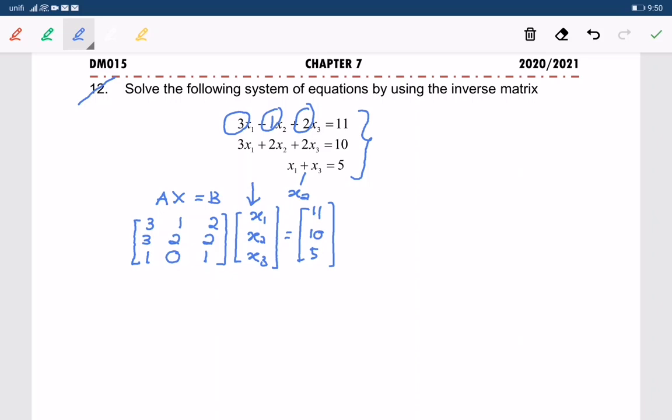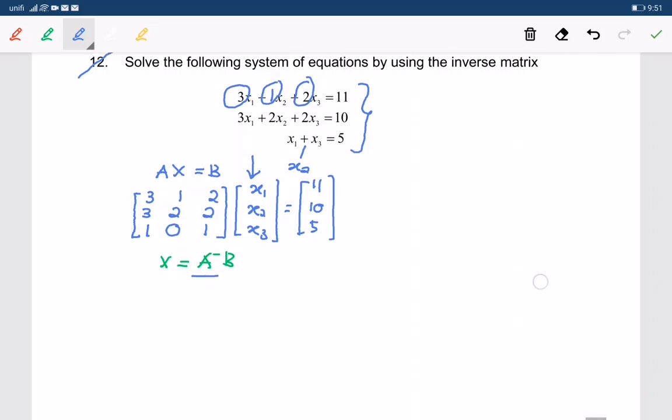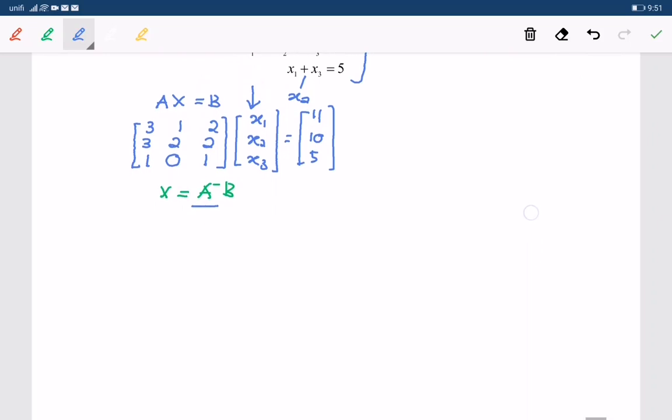In the earlier session, I have explained to you that we will use the formula of X equals A inverse times B. We have matrix of B. So now we need to find the matrix of A inverse. So by using the adjoint matrix, I will find the A inverse.